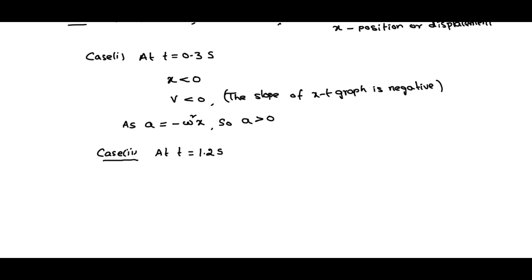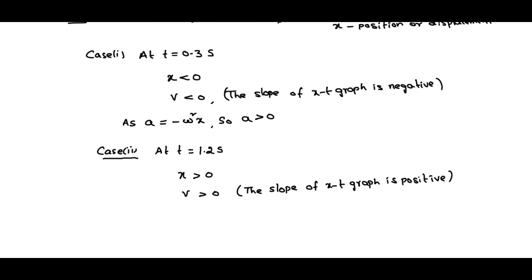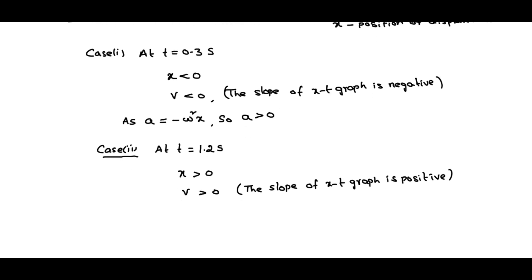We can see here: x is more than 0, and velocity is also more than 0, because the slope of the x-t graph is positive — every observation we are making from the diagram only. While coming to acceleration, it will be negative, because a equals minus omega squared x, and x is positive here. Positive times negative becomes negative, so a is negative or less than 0.